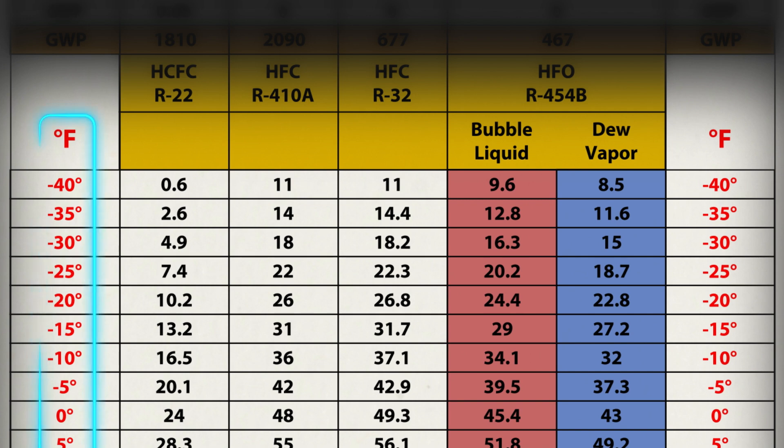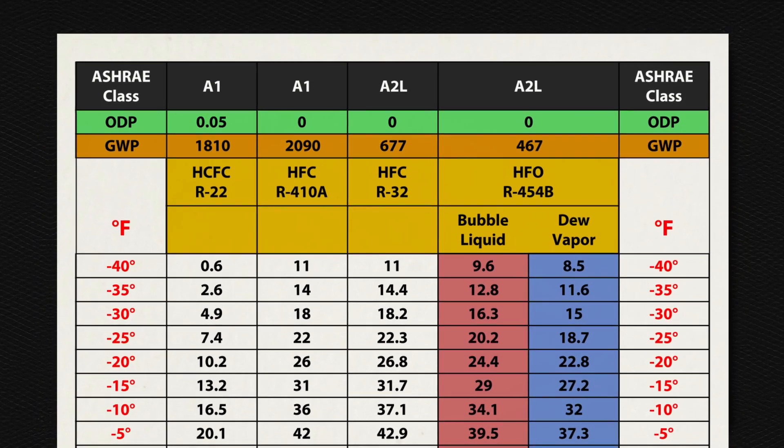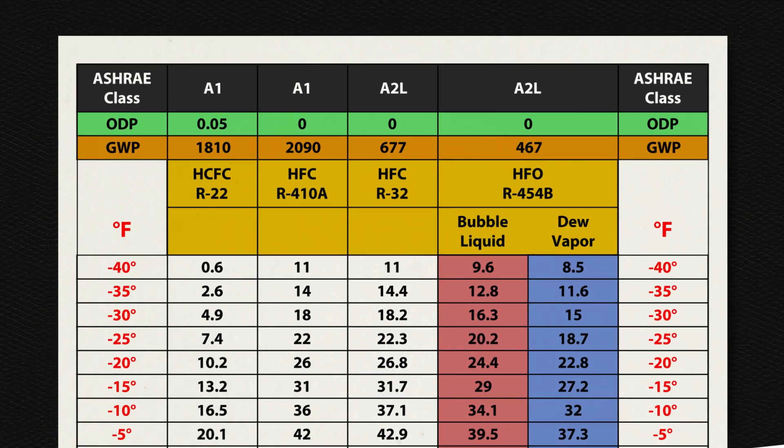On the left of the PT chart are the saturated temperatures, or boiling point, and in the body of the PT chart are the pressures for specific refrigerants. Remember, the saturated refrigerant will remain constant temperature at a given pressure.